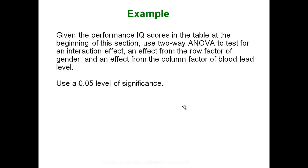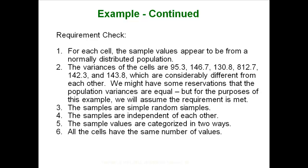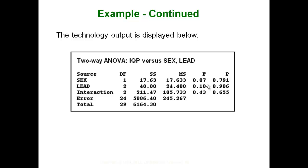Given our previous set of IQ scores, we are going to run a two-way ANOVA using alpha = .05. Running through requirements: for each cell the sample values appear normally distributed. If you calculate the six variances for those five sets of data, there is quite a difference — one is lower than the others and one is hugely higher. That is a problem and we might have reservations about equal population variances, but for this example we continue as if they are equal enough. The samples are simple random, independent, categorized two ways, and all have five values — so we are good to go. Throw it into technology and these are the results.